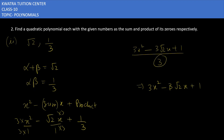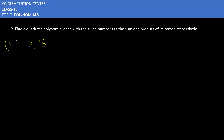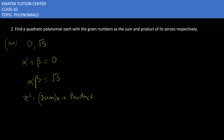Moving to the third one: alpha plus beta is 0 and alpha dot beta is root 5. Using x squared minus (sum)x plus product, the sum value is 0, so the middle term disappears, and the product is root 5. Your polynomial is x squared plus root 5. That is the answer for the third one.